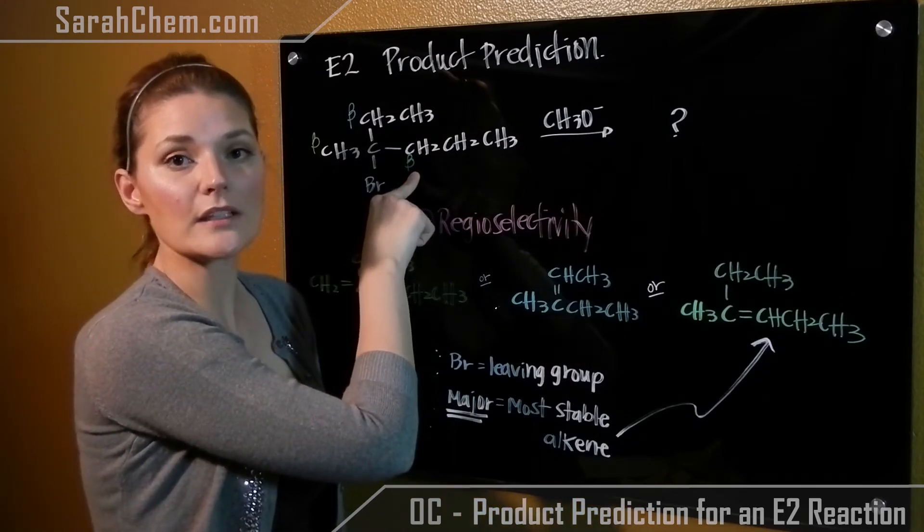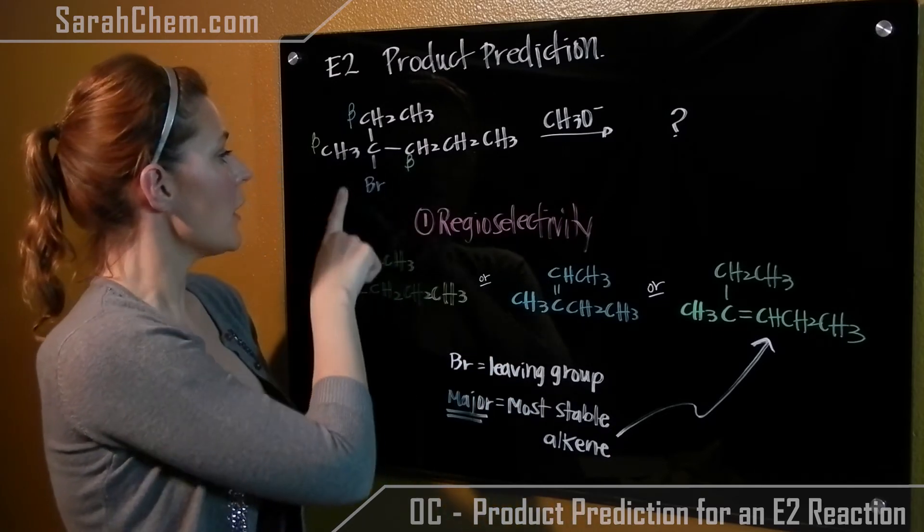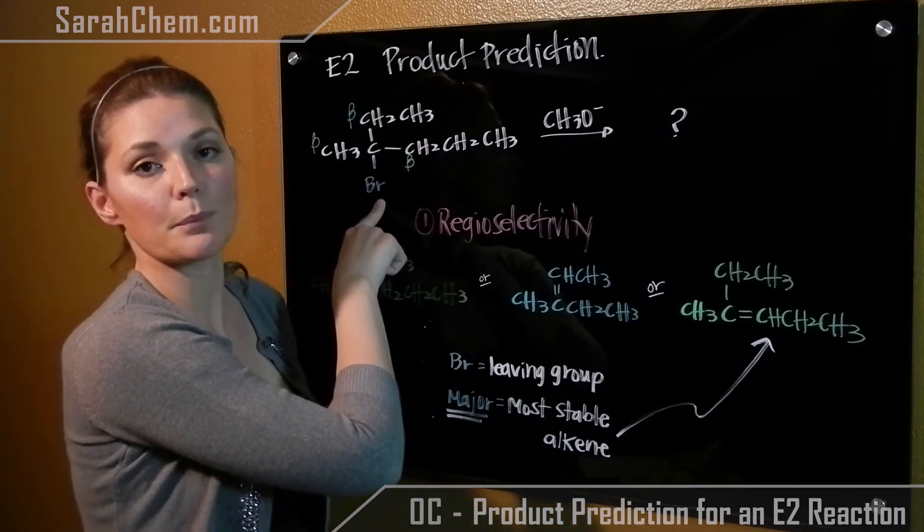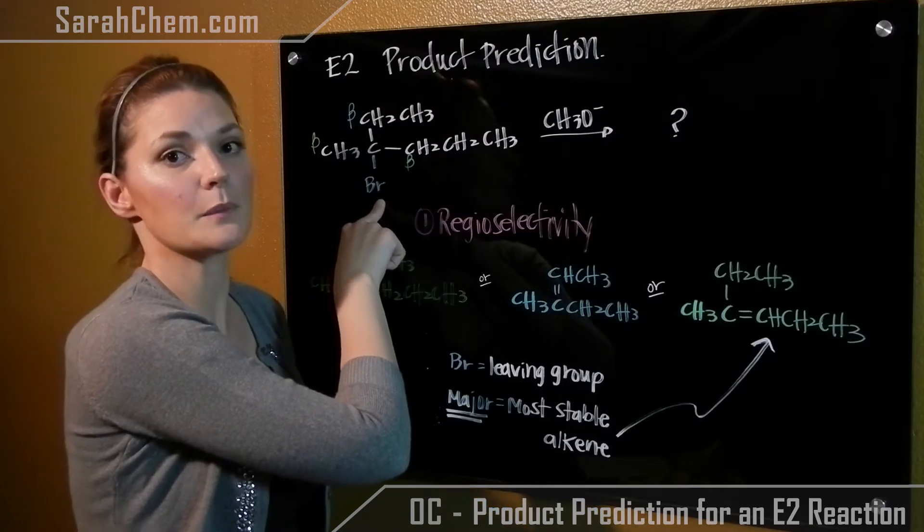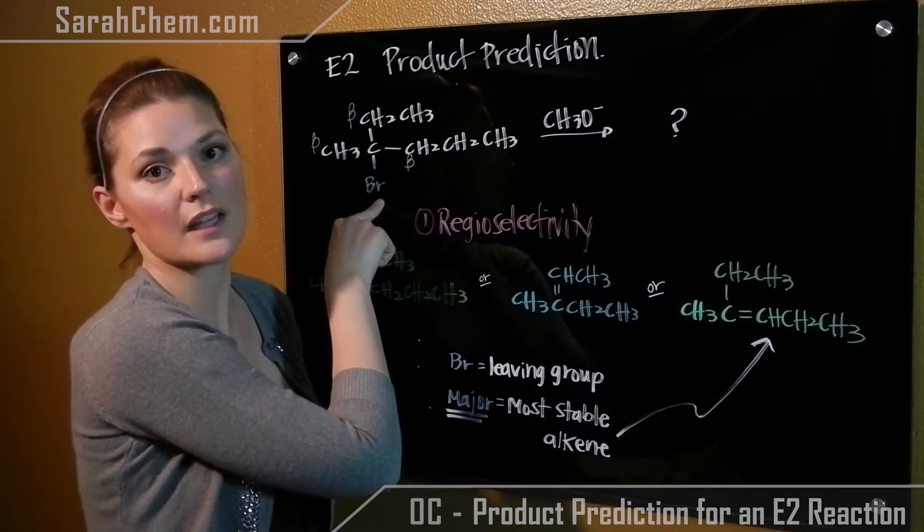The next thing we do when determining our major product is to take a look at what the leaving group is. So in this case, our leaving group is bromine. If leaving group is bromine, iodine, or chlorine, the major product will be the most stable alkene.